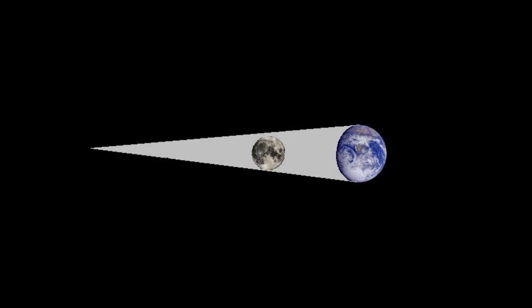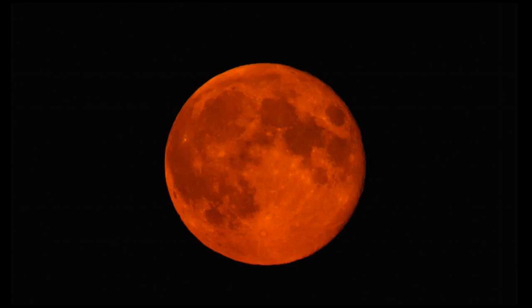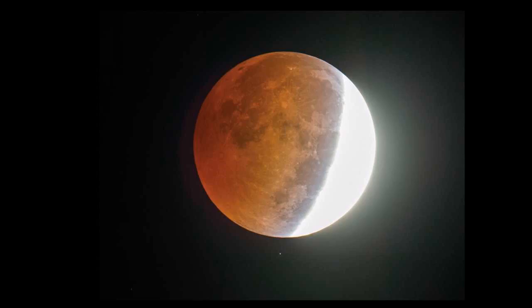A lunar eclipse occurs when the Moon passes through the shadow of the Earth. During a total lunar eclipse, because the Earth's atmosphere bends the Sun's light around the Earth, the Moon can become a deep, almost blood red. However, there are also times when it can become so dark that you cannot see it. A lunar eclipse is also an opportunity to directly observe the fact that the Earth is round, as you see the curved shadow of the Earth move across the lunar surface.